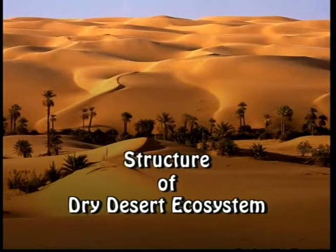Structure of Dry Desert Ecosystem: The chief controlling climatic factor for the formation of deserts is low rainfall. The rainfall is less than 25 cm per year and even that is not uniform. The daytime temperatures are very high and the nights are extremely cold. Only 10% of the land area is covered with plants, shrubs, herbs and trees.